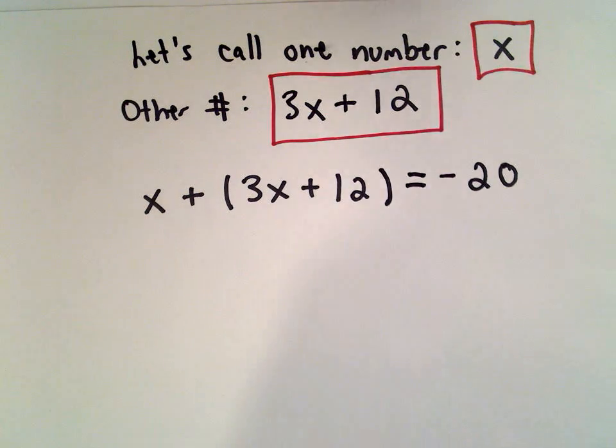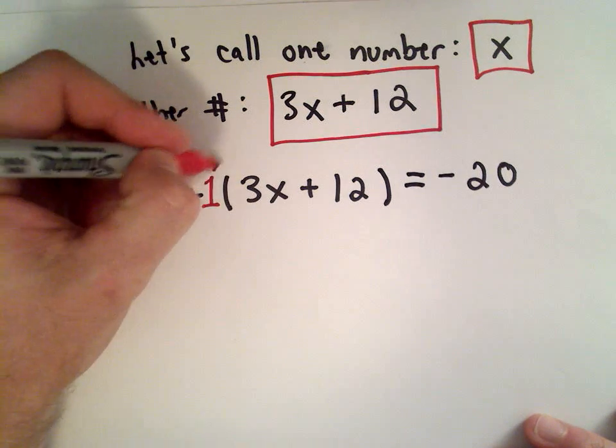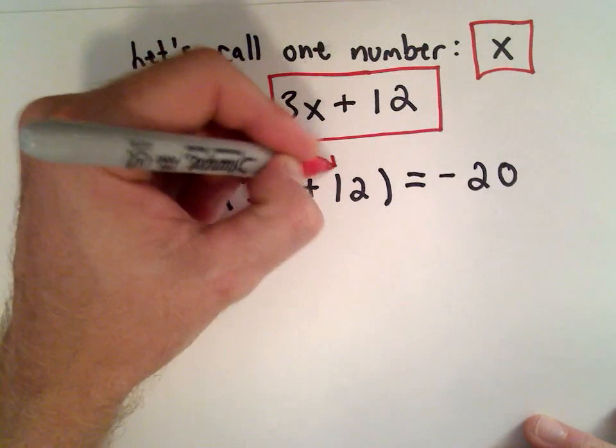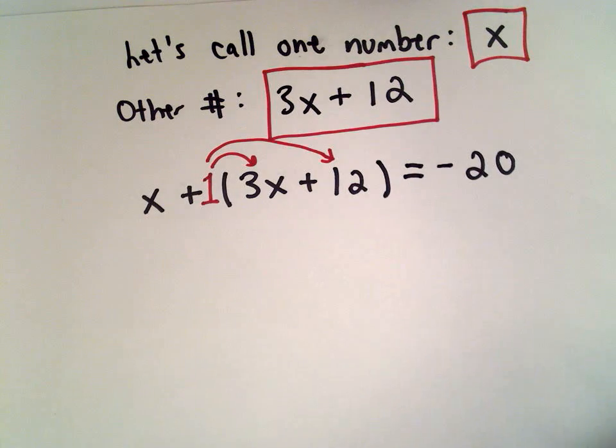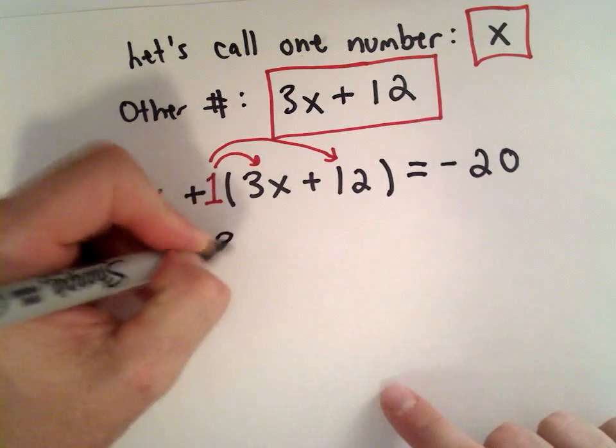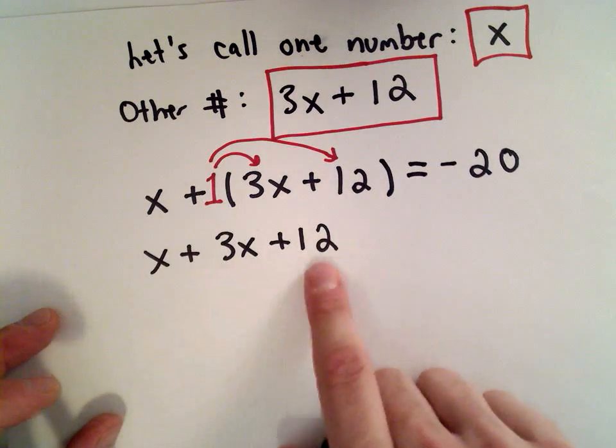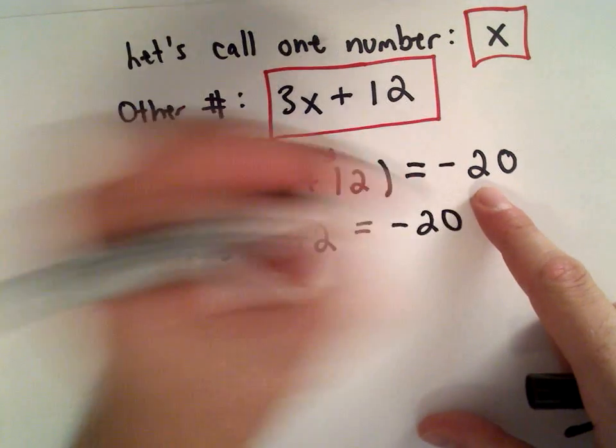In front of the parentheses we just have plus—you can think of it as plus 1. I've got to distribute that to get rid of the parentheses. But if you're just multiplying by plus 1, it doesn't change the values inside. So we'll be left with x plus 3x plus 12 equals negative 20.